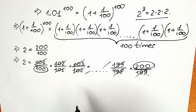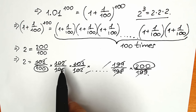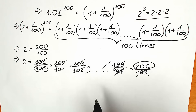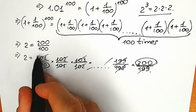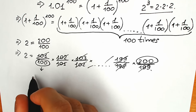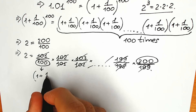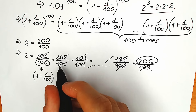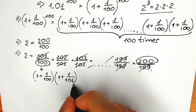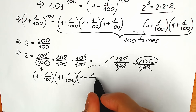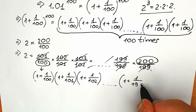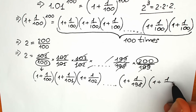Now let's look closely at these elements. How many elements do we have in this sequence? Of course 100 — we start with 100 and end with 200. Now let's rewrite each element: 101/100 can be written as 1 + 1/100; 102/101 as 1 + 1/101; 103/102 as 1 + 1/102; continuing all the way to 199/198 as 1 + 1/198, and 200/199 as 1 + 1/199.